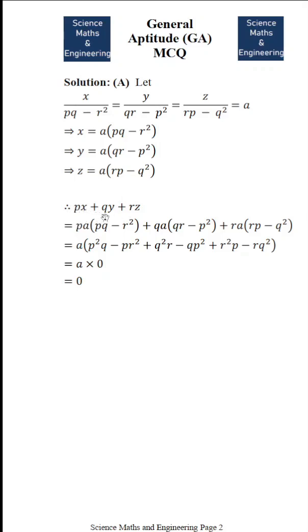our term px plus qy plus rz is equal to pa into pq minus r square plus qa into qr minus p square plus ra into rp minus q square.